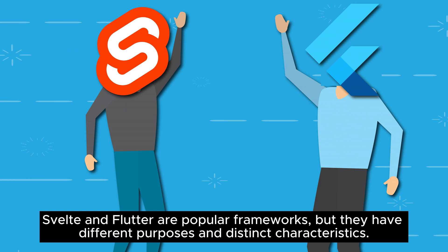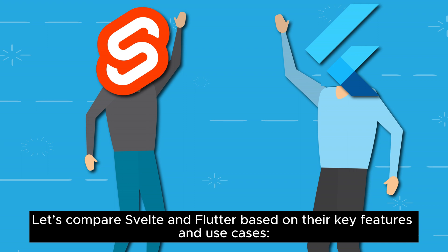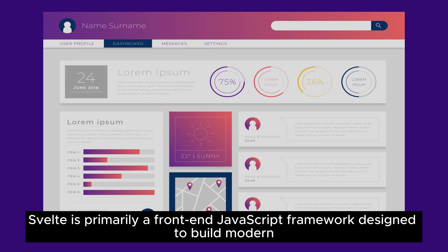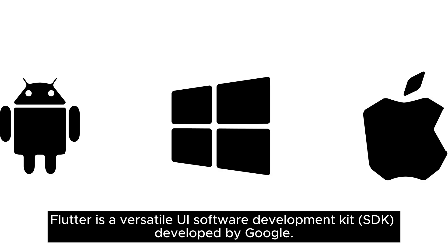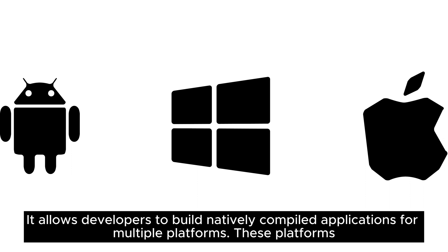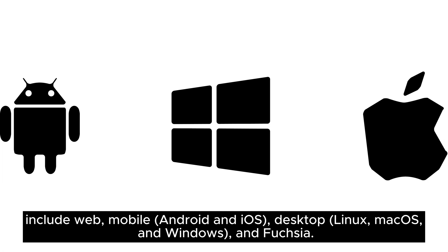Svelte and Flutter are popular frameworks but they have different purposes and distinct characteristics. In terms of purpose and platform: Svelte is primarily a front-end JavaScript framework designed to build modern web applications, focusing on creating user interfaces for web browsers. Flutter is a versatile UI SDK developed by Google that allows developers to build natively compiled applications for multiple platforms, including web, mobile (Android and iOS), desktop (Linux, macOS, and Windows), and Fuchsia.